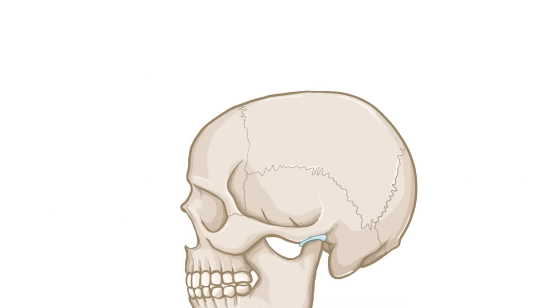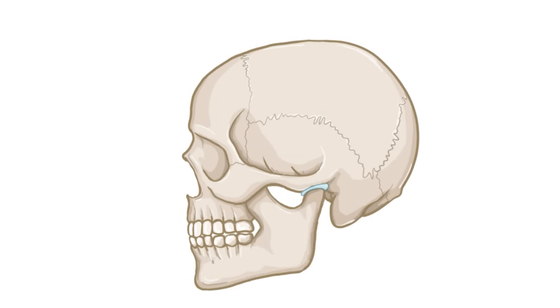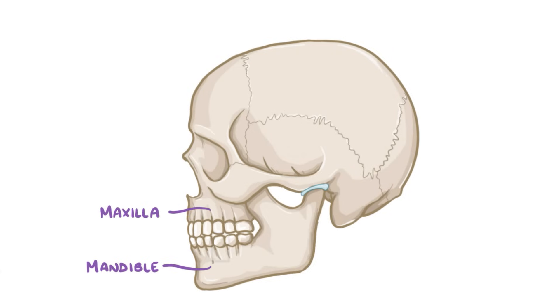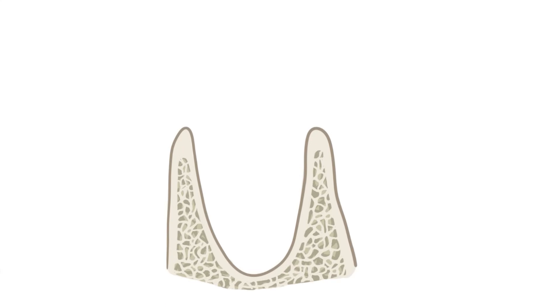Let's start by building a model of a tooth and its surrounding structures. In the mouth, the bone beneath the bottom row of teeth is the mandible, and the bone above the top row of teeth is the maxilla. Both bones have an alveolus, or socket, for each tooth.